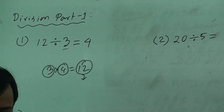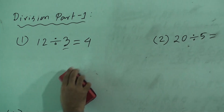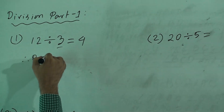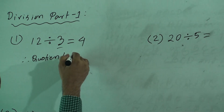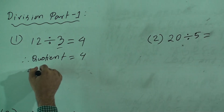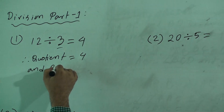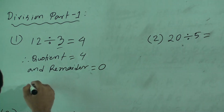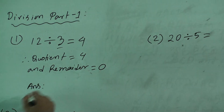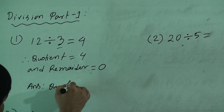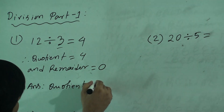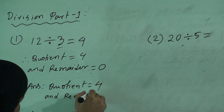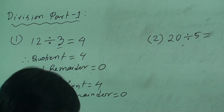As there is nothing remaining, we can write quotient equal to 4 and remainder equal to 0. So, we can write the answer: quotient equal to 4 and remainder is 0.